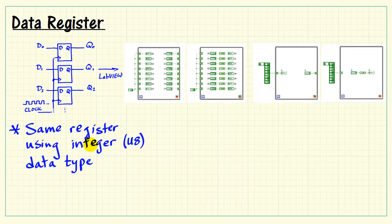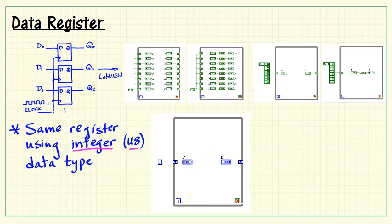Now the same 8-bit register can also be expressed using the integer, and more specifically the unsigned 8-bit integer data type. And that appears this way. So we initialize this with a zero constant. Its data type is unsigned 8 bits.